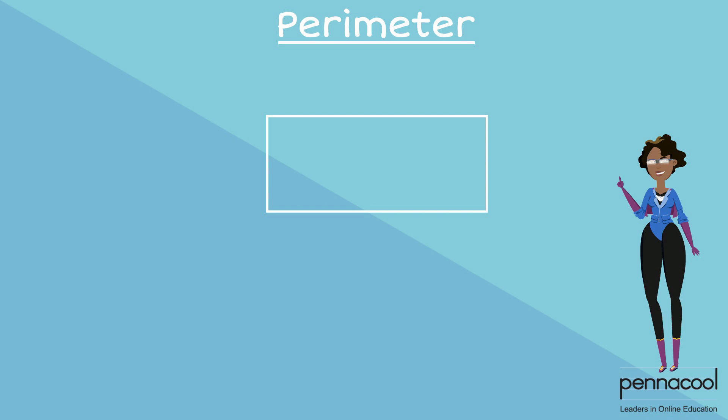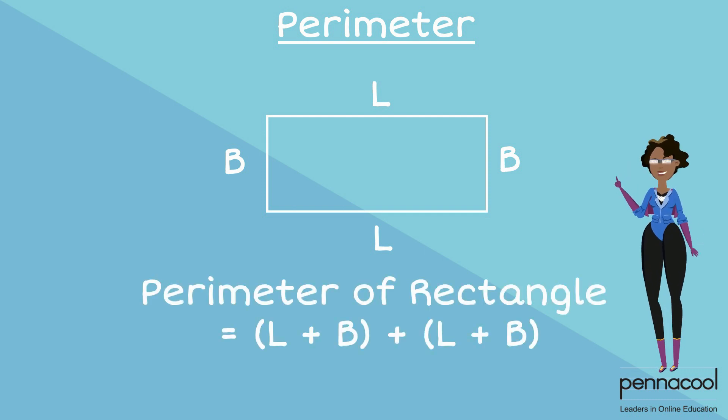That gives us two sides labeled as the length, as well as two sides labeled as the breadth. We can use the formula length plus breadth plus length plus breadth. Or we can use something a bit simpler: two times length plus breadth, as we add the length and breadth twice each.